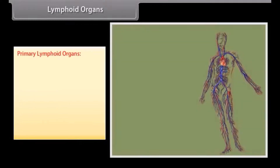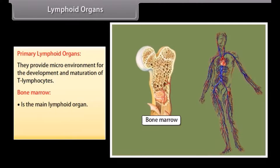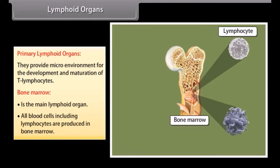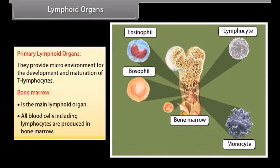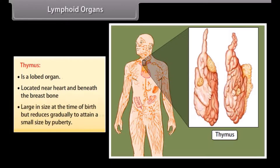Primary lymphoid organs provide a microenvironment for the development and maturation of T lymphocytes. Bone marrow is the main lymphoid organ where all blood cells, including lymphocytes, are produced. Thymus is a lobed organ located near the heart and beneath the breast bone. It is large in size at the time of birth but reduces gradually to attain a small size by puberty.